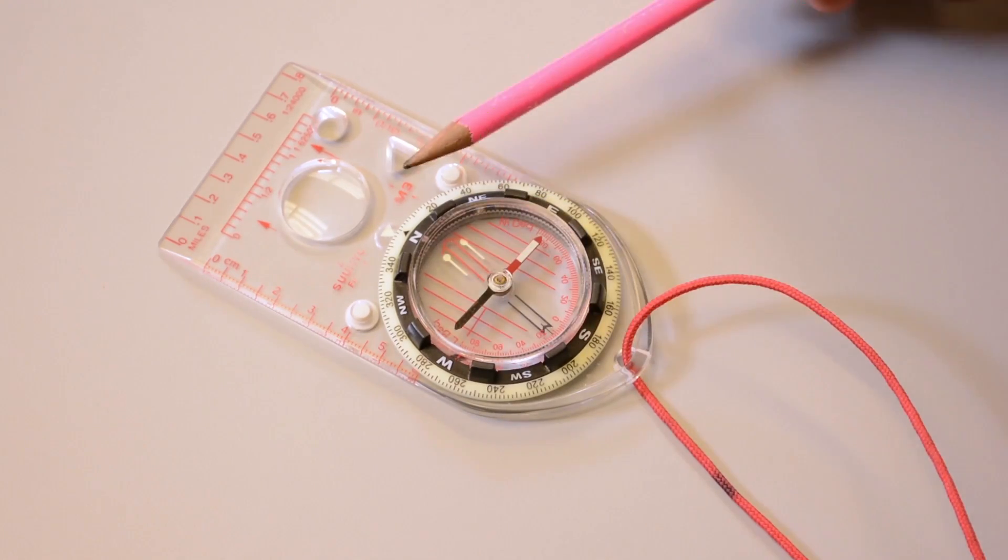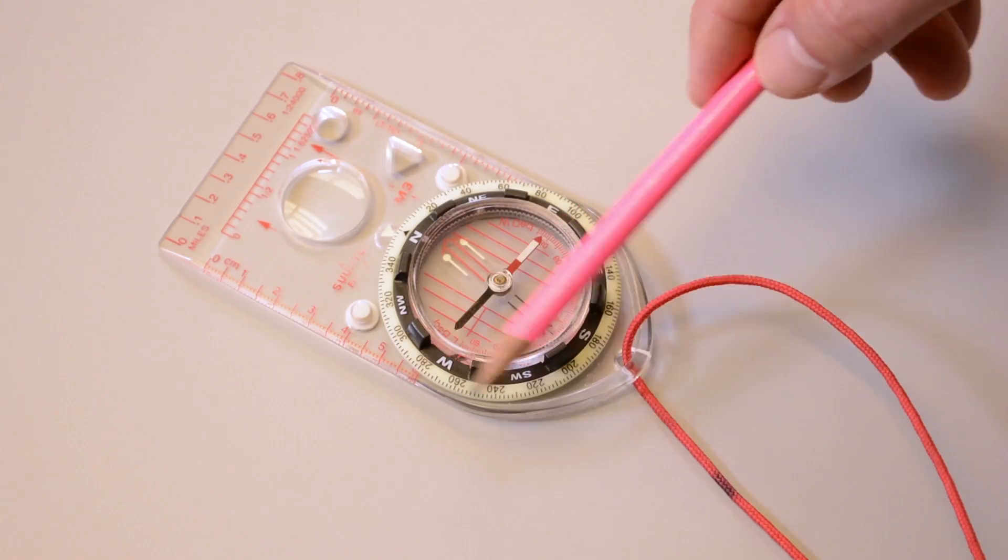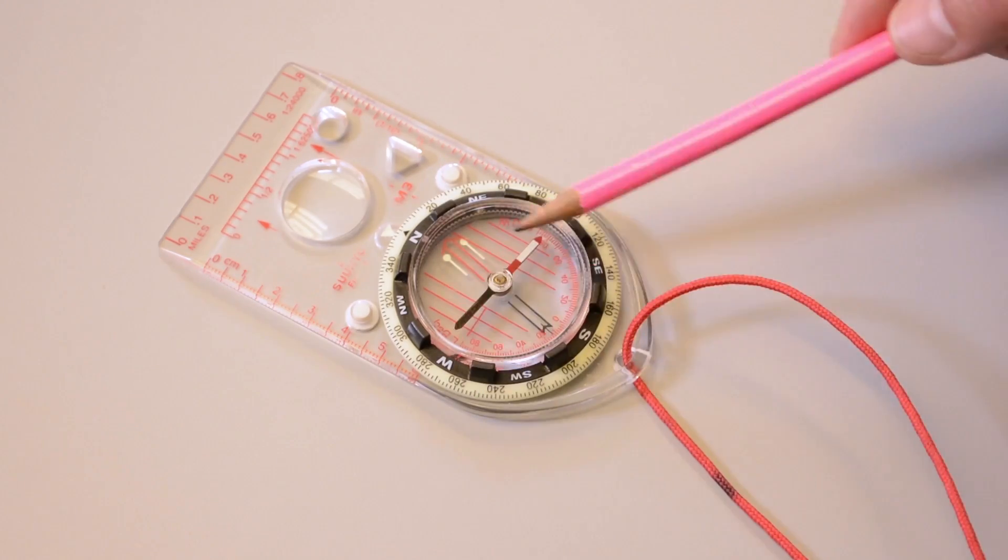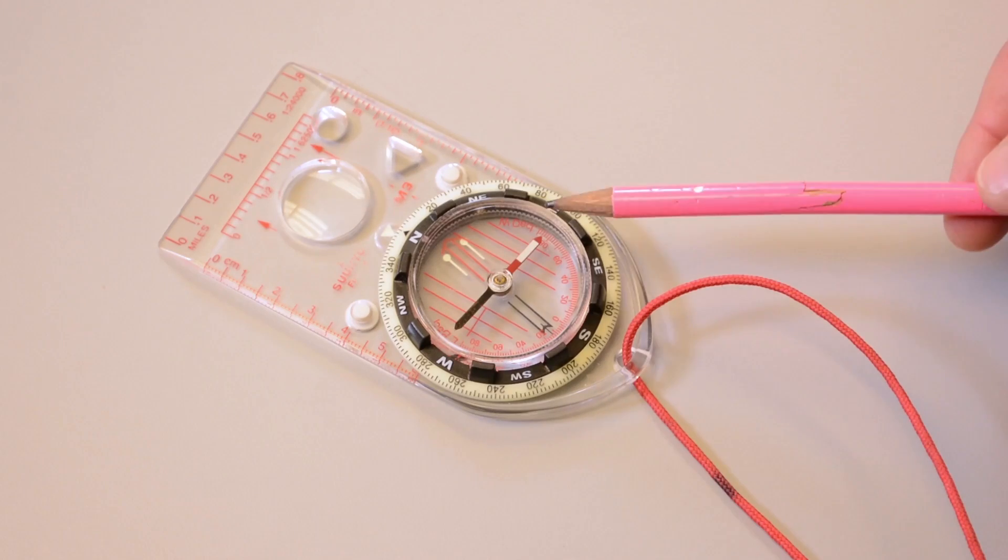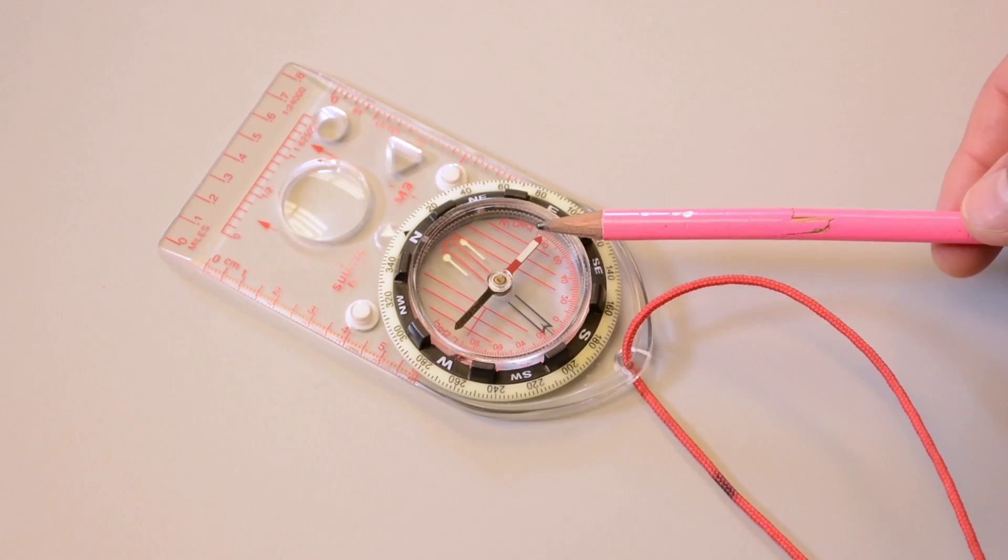Looking at the dial, we've got a ring of 360 degrees in two degree increments on the outer edge, along with the cardinal directions of north, east, south, and west. Inside the dial, we have a liquid-filled center, which makes the needle settle faster and your bearings more accurate. This is the magnetic needle, with the red end always pointing to magnetic north.